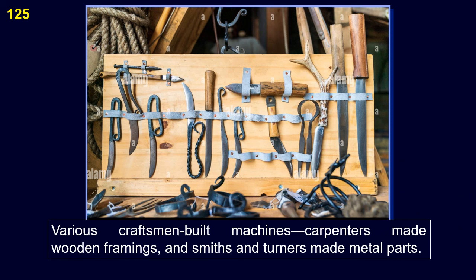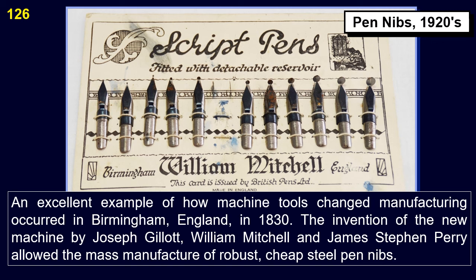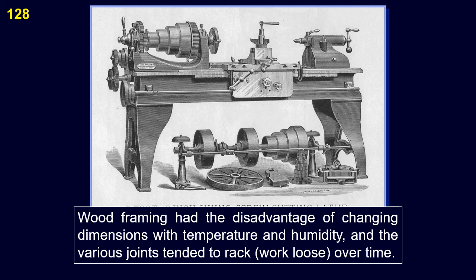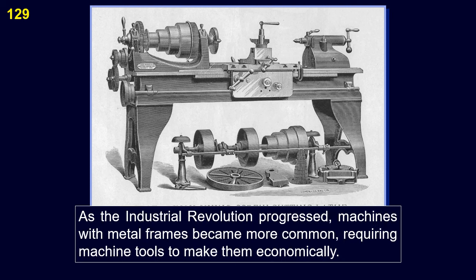Various craftsmen built machines — carpenters made wooden framings, and smiths and turners made metal parts. An excellent example of how machine tools changed manufacturing occurred in Birmingham, England, in 1830: the invention of a new machine by Joseph Gillett, William Mitchell, and James Stephen Perry allowed the mass manufacture of robust, cheap steel pen nibs. The process had previously been laborious and expensive. Because of the difficulty of manipulating metal and the lack of machine tools, the use of metal was kept to a minimum. Wood framing had the disadvantage of changing dimensions with temperature and humidity, and the various joints tended to rack and work loose over time. As the industrial revolution progressed, machines with metal frames became more common, requiring machine tools to make them economically.